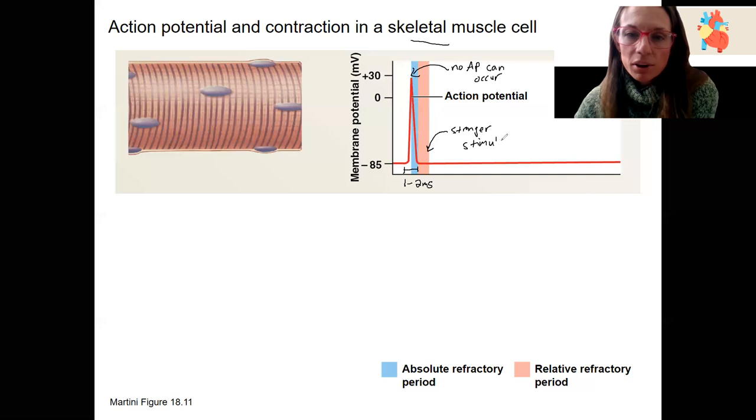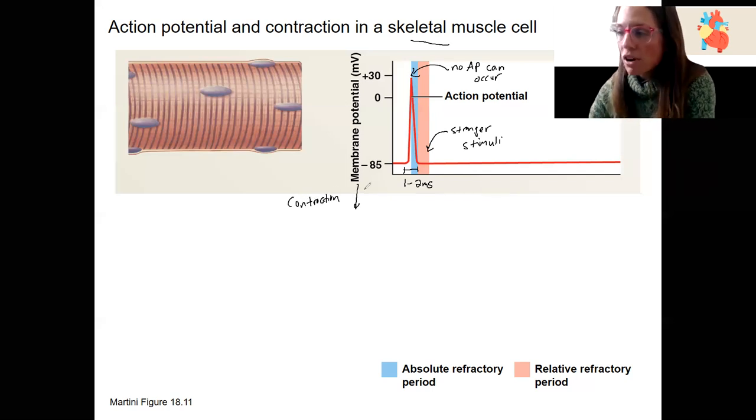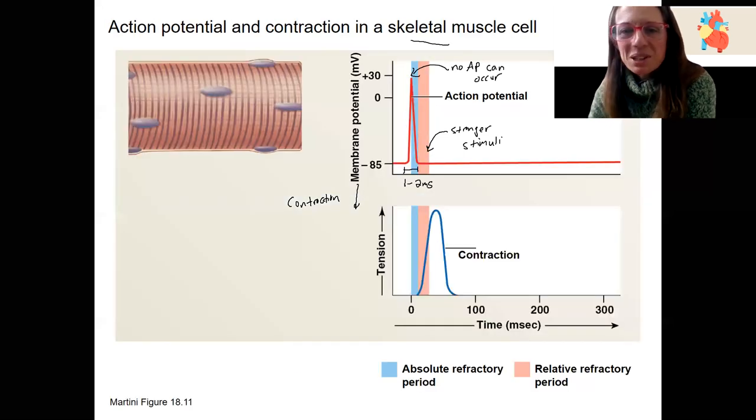Stronger stimulus than normal would be needed. It's a relative refractory period. And these are especially significant for muscle because this means you cannot, this is going to correspond to refractory periods in contraction. So I want to go over this is our action potential. Remember our excitation-contraction coupling. So what does this look like if we look at what this action potential does to muscle contraction?